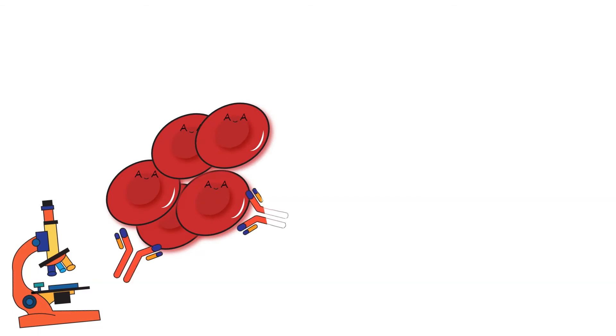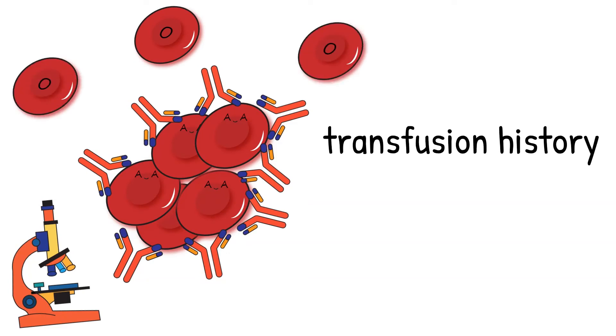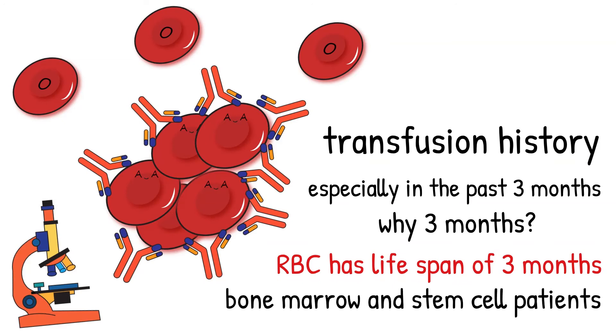Most of the time, we can see this when a non-group O person has been transfused with group O RBC. This can be solved by asking patient transfusion history. We generally ask if the patient has been transfused within the past three months. Why three months? It's because red blood cells has lifespan of three months.